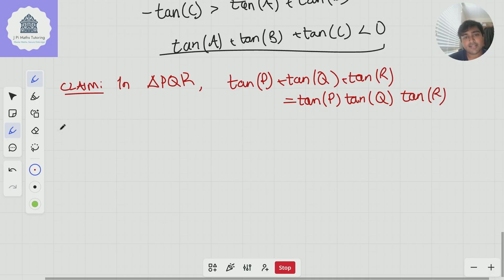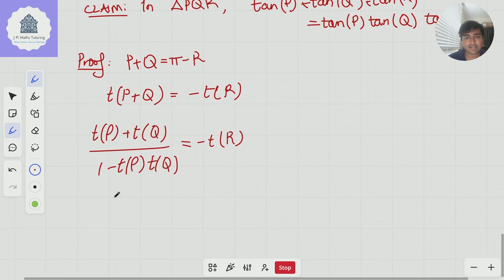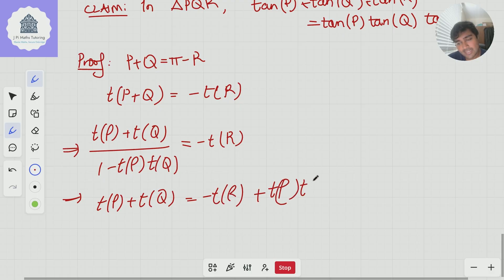This is actually pretty straightforward to prove. We're going to start from the fact that P + Q = π - R. So tan(P+Q) = tan(π-R), which is -tan(R). But now if we're allowing ourselves to use the compound angle formulae, we get [tan(P) + tan(Q)]/[1 - tan(P)tan(Q)] = -tan(R). And so if I cross multiply here, I get tan(P) + tan(Q) = -tan(R) + tan(P)tan(Q)tan(R). And then just adding the tan(R) to both sides gives us this result really nicely.